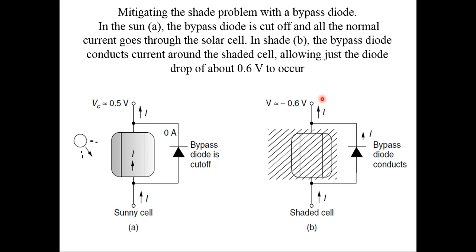If we consider a bypass diode across each cell, in the initial case this bypass diode is in cut-off — that is, in reverse bias mode. When the cell has been shaded, the bypass diode conducts. As it conducts, that cell is bypassed — which is why it is known as the bypass diode. Obviously, we need to bear the voltage drop of the diode, but in a large system it is a totally bearable thing.